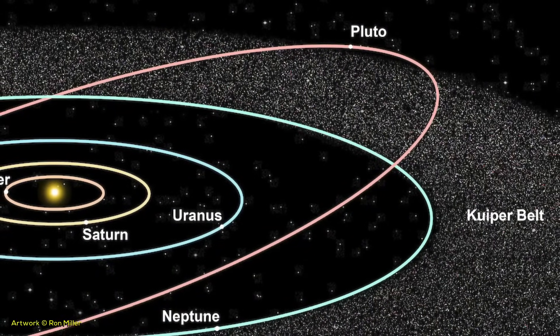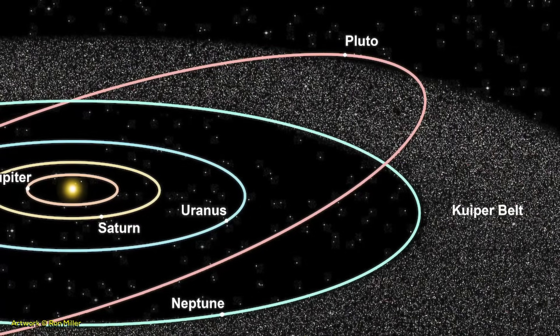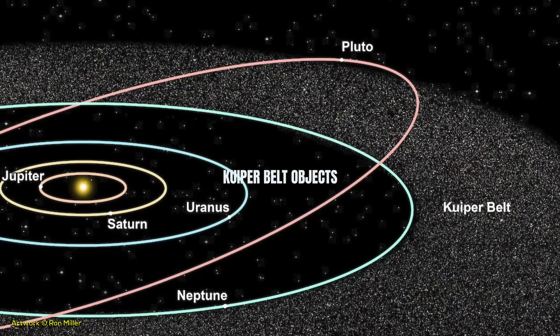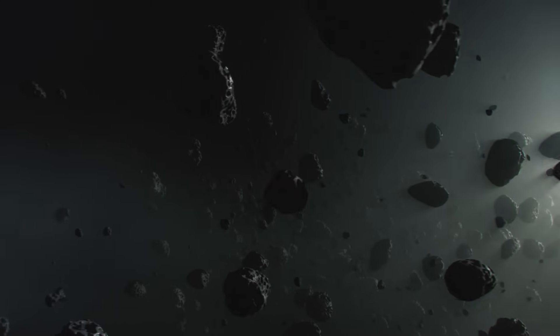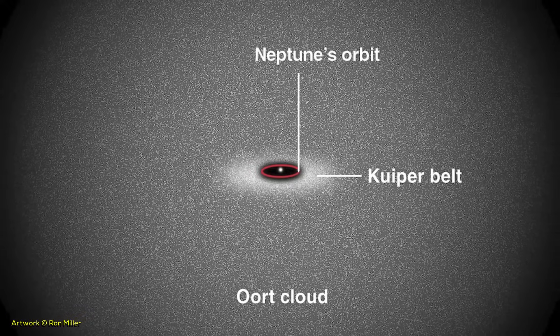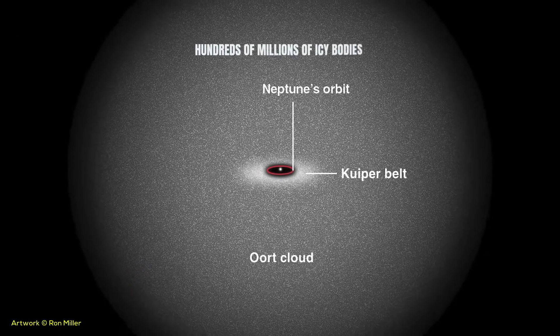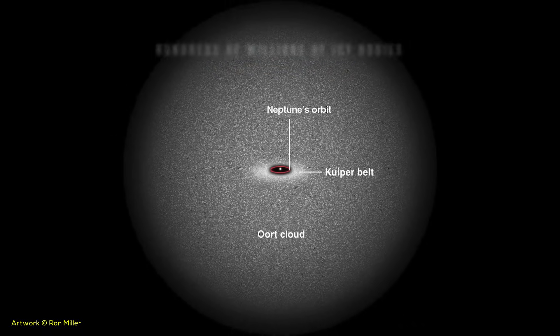To understand the Kuiper belt, you should know that beyond the orbit of Neptune there is an asteroid belt similar to the one between Mars and Jupiter — this is the Kuiper belt. The main difference is that objects in the Kuiper belt are not called asteroids but Kuiper belt objects, which are divided into two groups: Plutinos and Cubewanos. Plutinos are objects in the same region as Pluto, and Cubewanos are further away. Beyond the Kuiper belt we find the Oort cloud, the last region of the solar system, filled with hundreds of millions of icy bodies and where long-period comets come from.